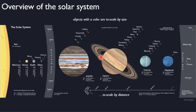So again, the objects that have a color, they're accurately portrayed by size. By distance, it's hard to do size and distance at the same time and see anything.